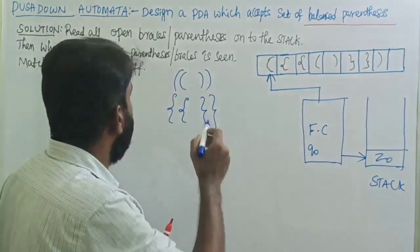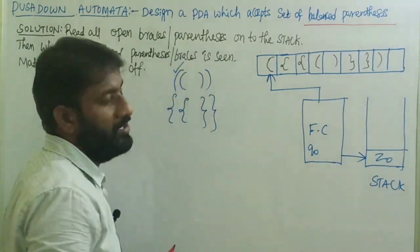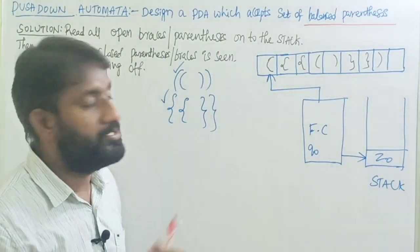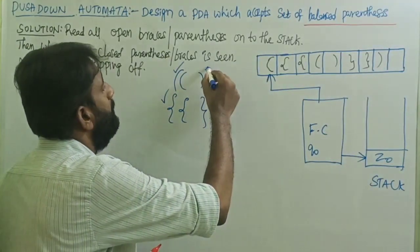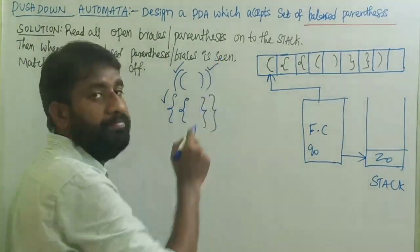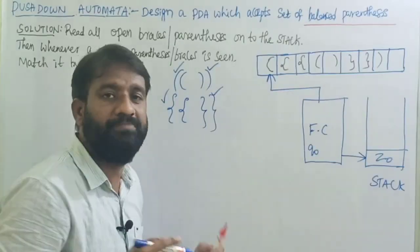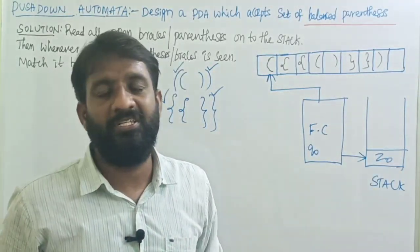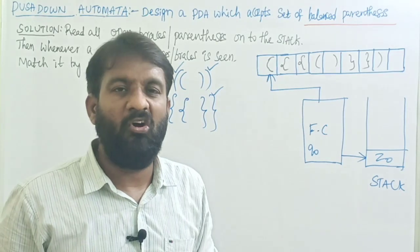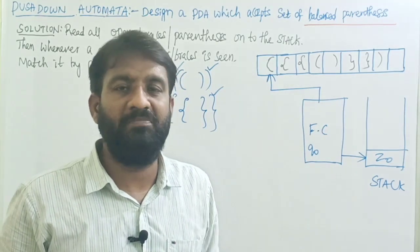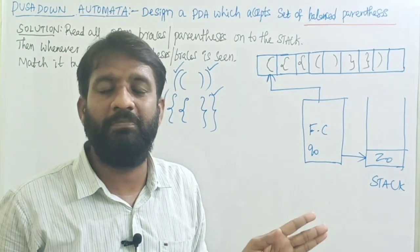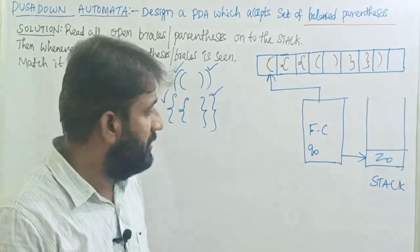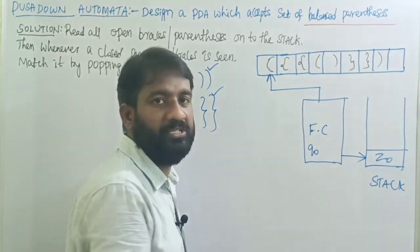The string can start with either open brace or open parenthesis, and can end with either closed brace or closed parenthesis. The logic is: first, read all open symbols — open brace or open parenthesis — onto the stack, and remain on state q0.